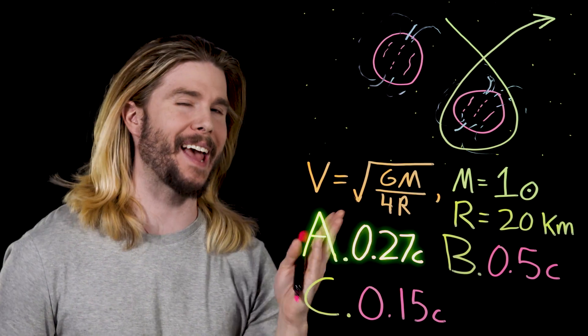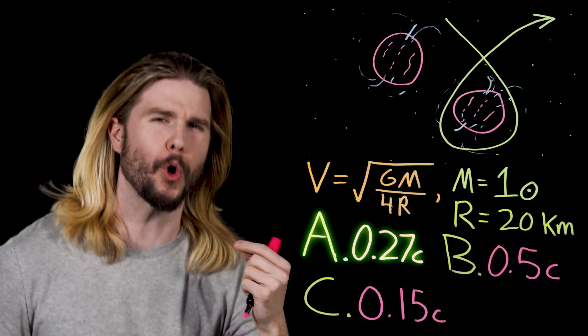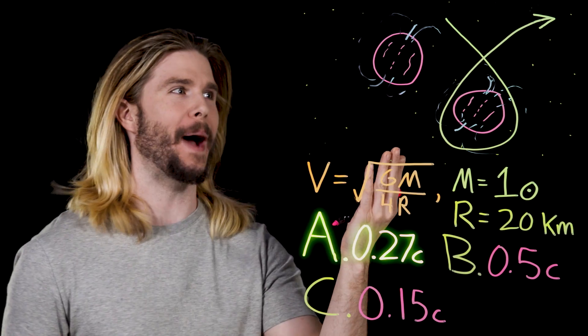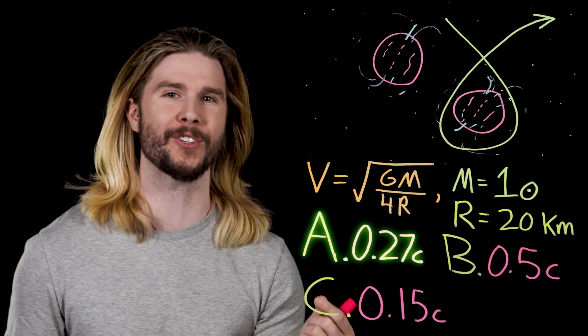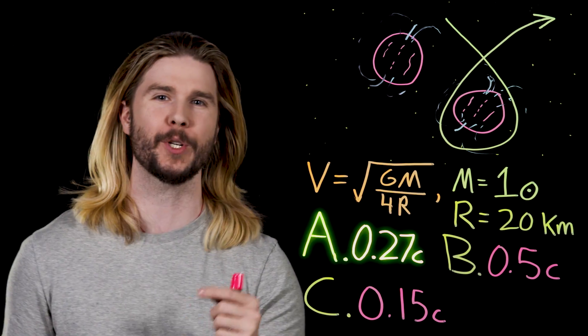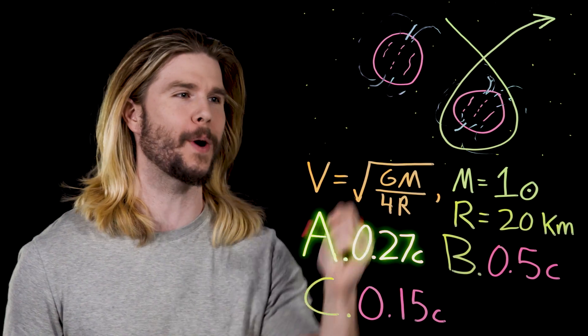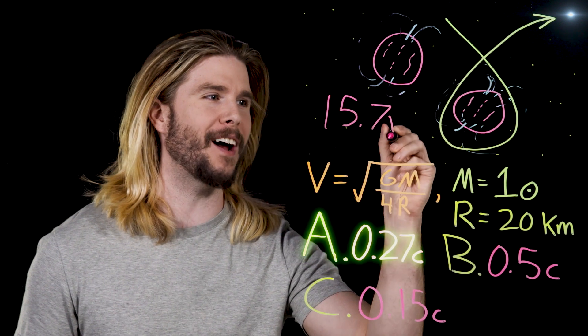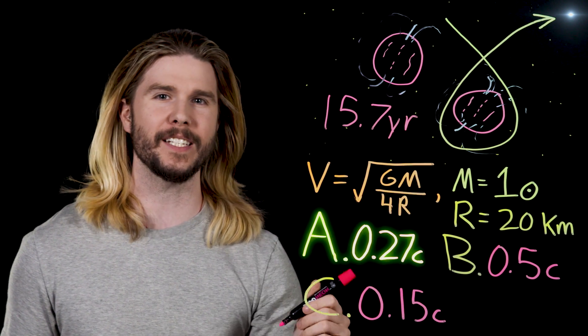The correct answer is A, a little over a quarter of the speed of light. This is the true power of a theoretical neutron star slingshot, a gravitational machine that can get you going so quickly, you could reach the nearest star not in generations, but in under 16 years.